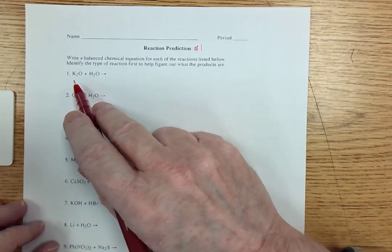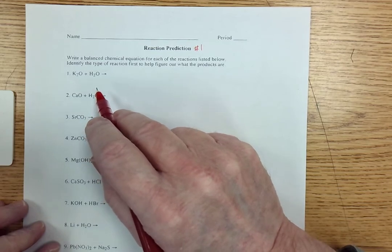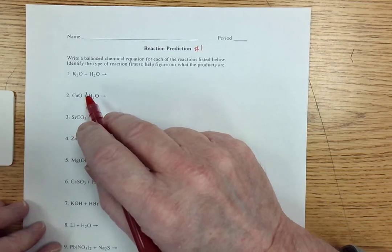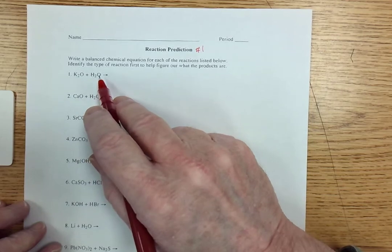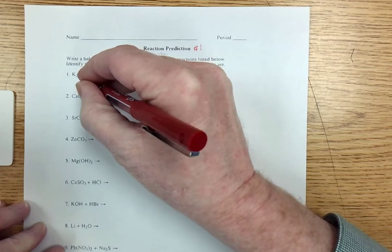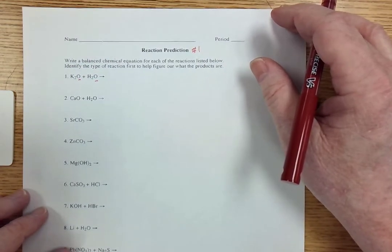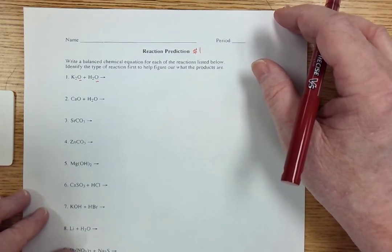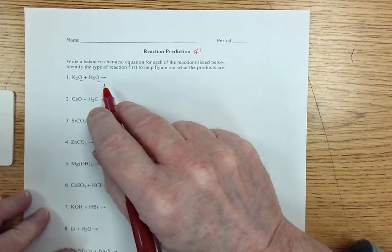So when we look here, we have K2O plus H2O. Now I know it's not a decomposition because it's got more than one reactant. And I know it's not a single replacement reaction because there's nothing here that's single. Compound and compound. It could be a double replacement, but I doubt it because both of these are the same anion oxide. So that means this is a synthesis. Sometimes we call it a combination. When I look up my different types of combination reactions, metal oxide and water forms bases.